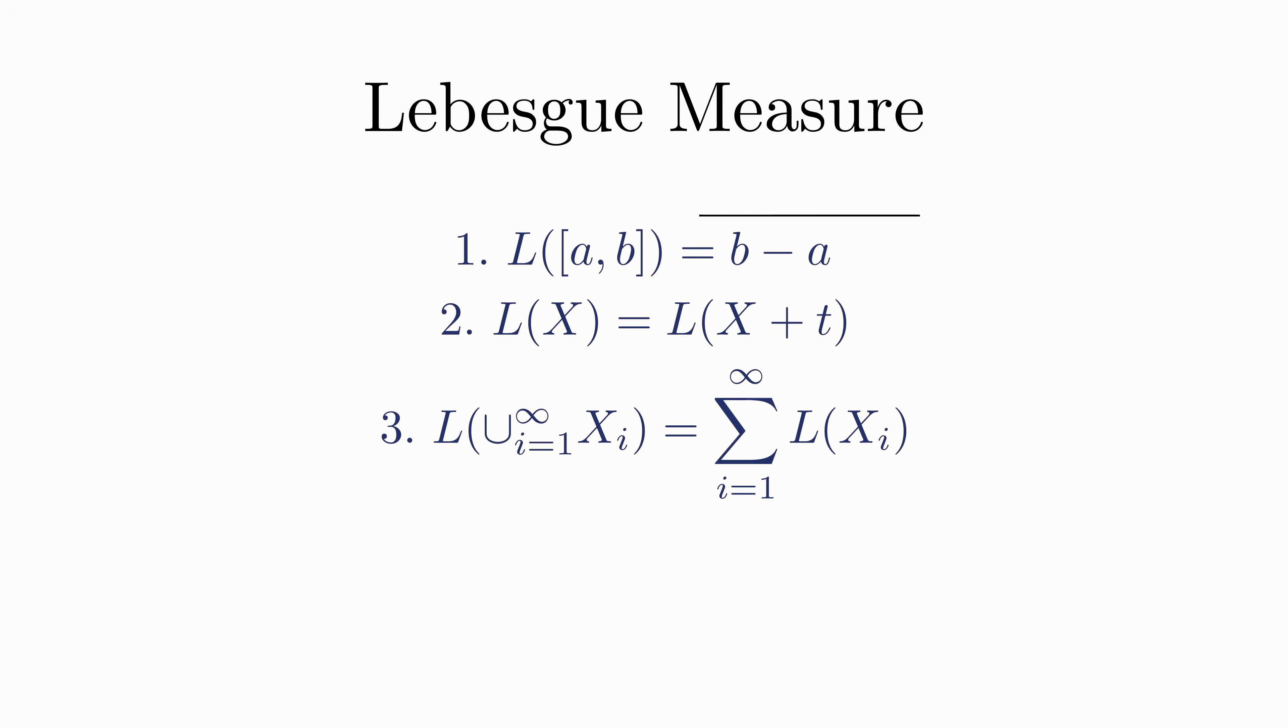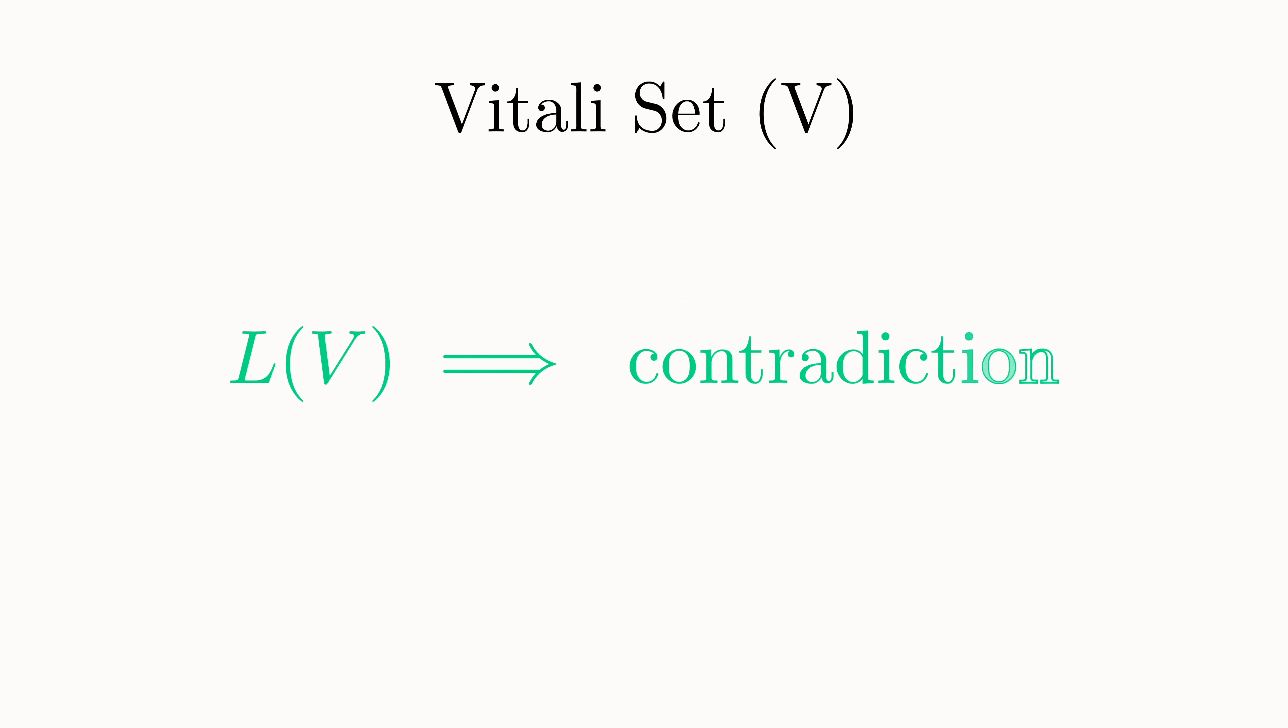Lebesgue's initial goal was to have an additional fourth rule, that L was defined for all subsets on the real number line. Due to the ingenious work of Vitali, however, this quickly became a logical impossibility. Vitali discovered a set so strange that it contained an uncountably infinite number of points, yet if you attempted to assign any non-negative number as its size, it would result in a contradiction. The way he did it is as follows.